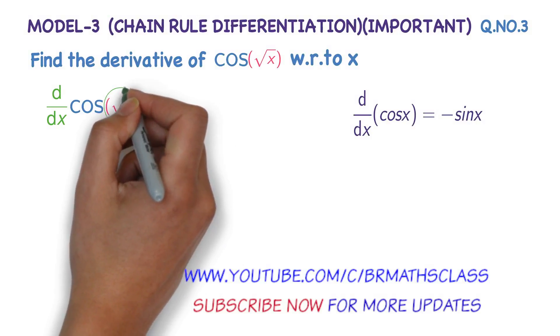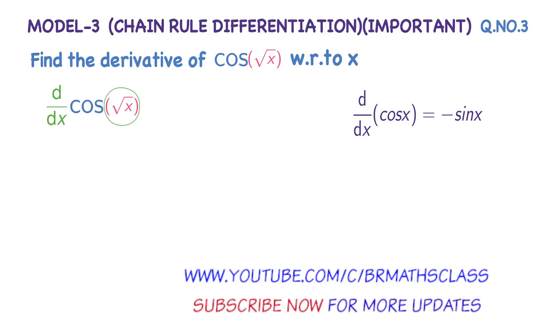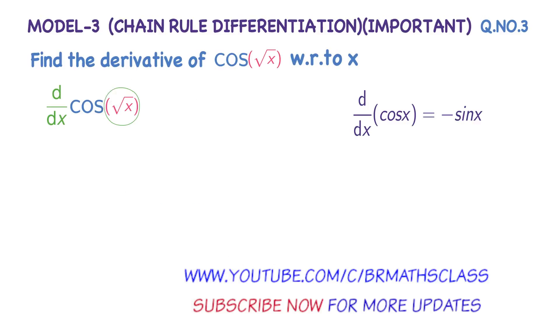Now, imagine √x as x. It looks like cos x. What is the derivative of cos x? The derivative of cos x is minus sin x. So what is the derivative of cos(√x)?